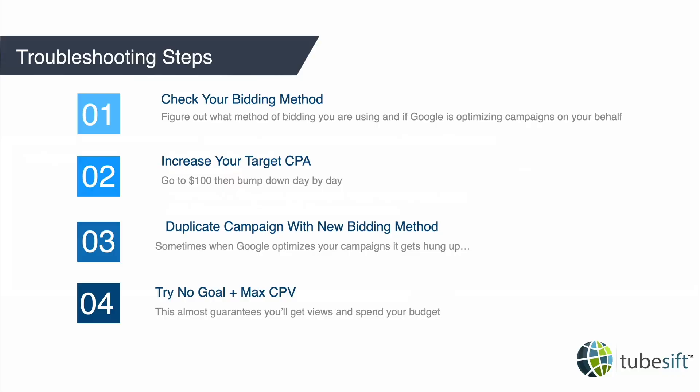Now let's talk about exactly how to troubleshoot your ads — I will be jumping over to Google Ads and talking all about this in a second. But first I want to cover how you troubleshoot your ads. Number one, you're going to want to check your bidding method — figure out which bidding method you used, because if Google's optimizing for conversions and you have no conversion data, they don't quite know what to optimize on. Sometimes it's best to start with a no goal and get a couple of conversions so Google knows what's going on and can start to push some traffic.